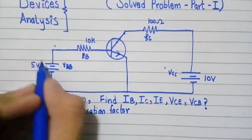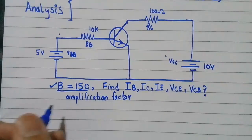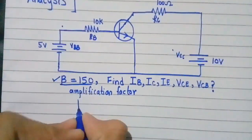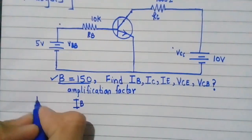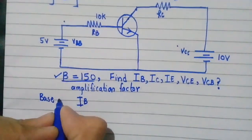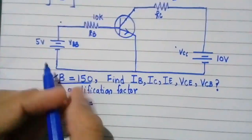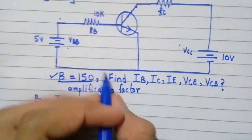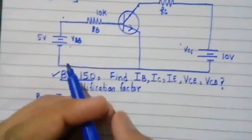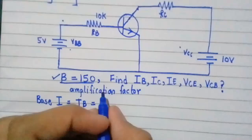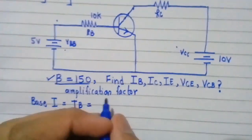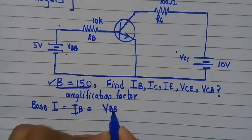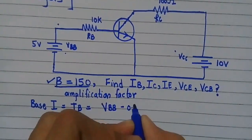First of all, we analyze the input loop. From the input loop, there is the battery with voltage Vbb and we have to find Ib. By Ohm's law, the base current Ib will be equal to this voltage minus this voltage, because this is the forward-biased diode — it is the base-emitter junction. Since it is a forward-biased diode, the voltage drop is 0.7 volts.